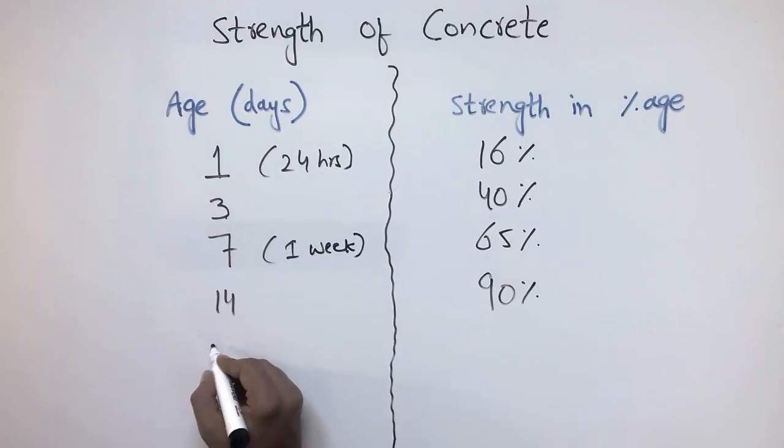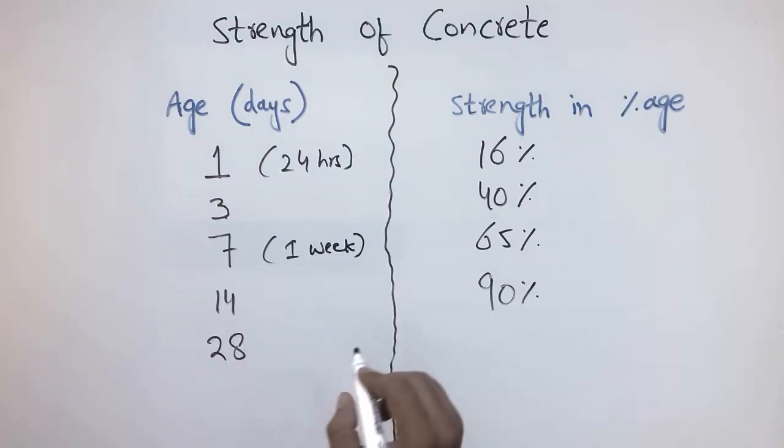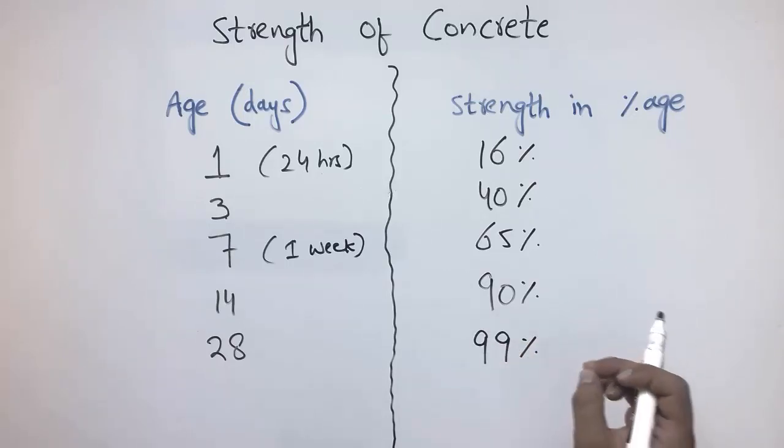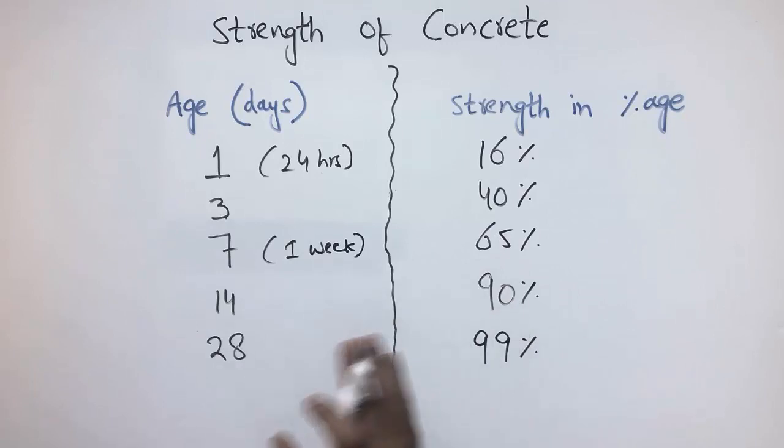After 28 days, we can expect that the concrete gains 99 percent of its strength. While this 99 percent strength keeps increasing from 99.1, 99.2, 99.3, it can never achieve hundred percent strength during the whole life of the concrete.